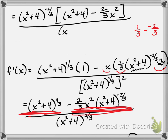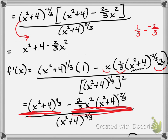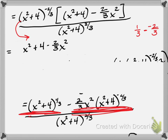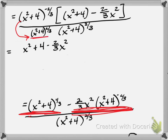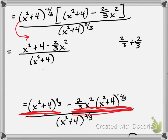All over x squared plus 4 to the two-thirds. Let's think about moving the factored term to the denominator and making its power positive. When we do that, the numerator will have x squared plus 4 minus two-thirds x squared. Moving that down to the bottom and making it positive, we'll be multiplying like bases and adding exponents. In the denominator we'll have x squared plus 4 to the four-thirds power.